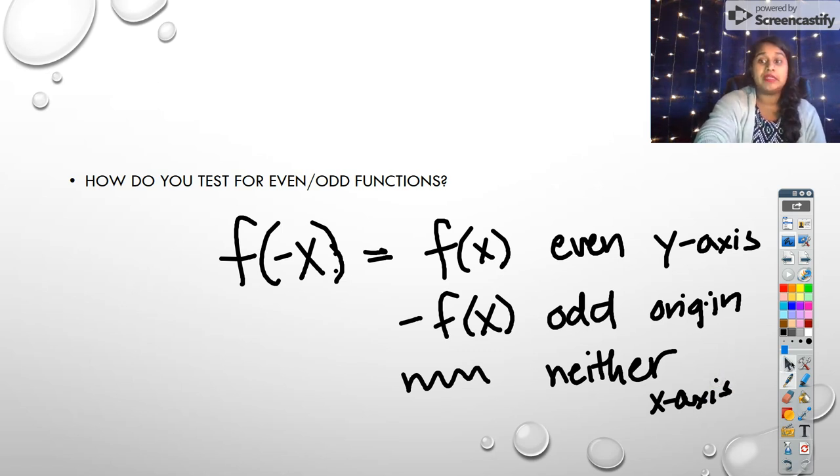Because remember, x-axis symmetry is not a function. So that would be why if you're testing if something is even or odd function, neither means it's not a function.